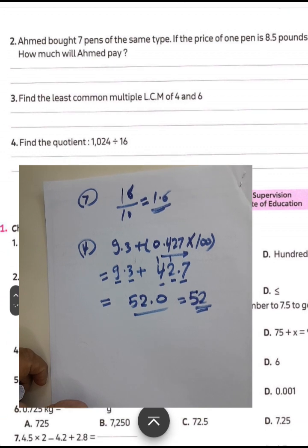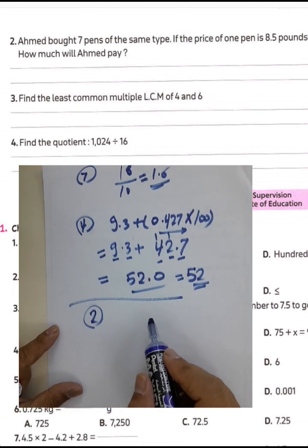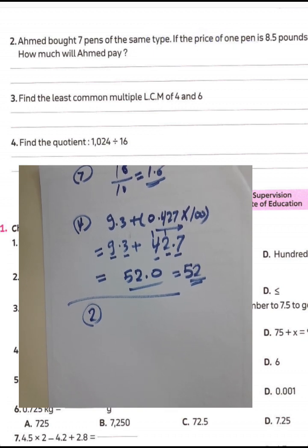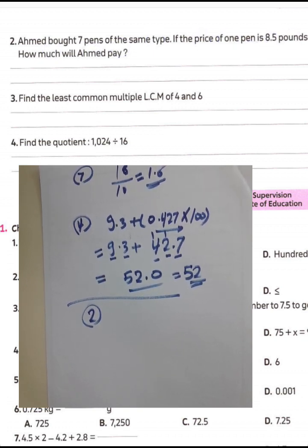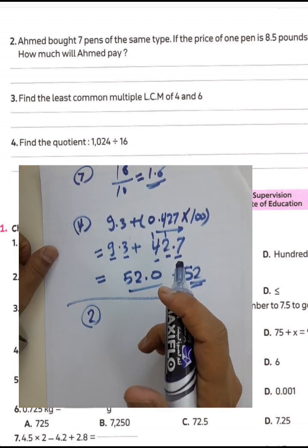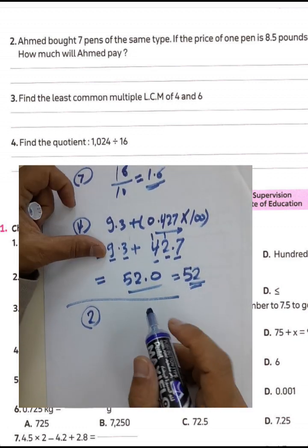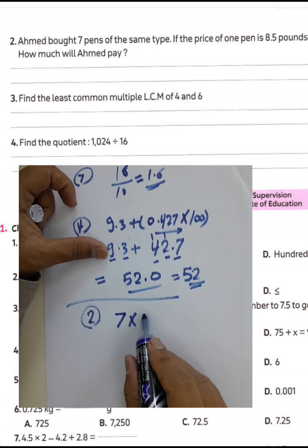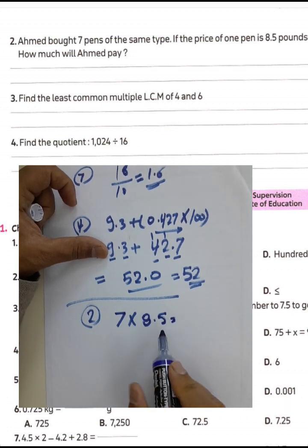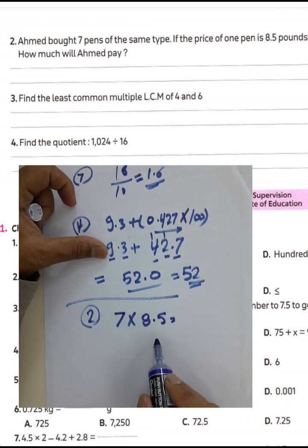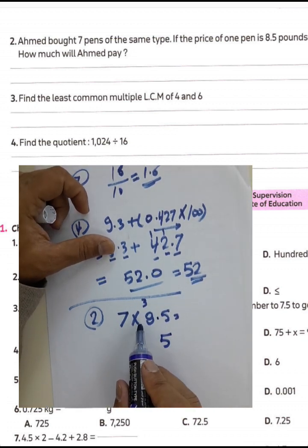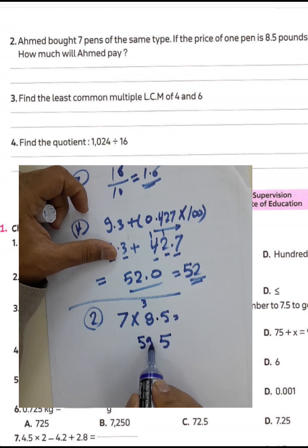Question number two: Ahmed bought 7 pens at the same time. The price of one pen is 8.5 pounds. How much will Ahmed pay? We find the total by multiplying: 7 times 5 equals 35, write 5 and carry 3; 7 times 8 equals 56, plus 3 equals 59. Then place the decimal point. The total is 59.5 pounds.